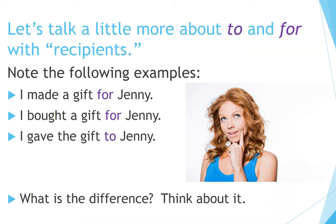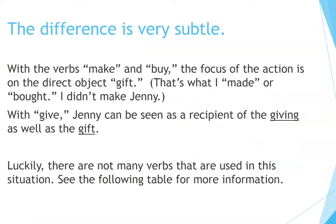Let's talk more about 'to' and 'for' with recipients. Consider: 'I made a gift for Jenny,' 'I bought a gift for Jenny,' and 'I gave the gift to Jenny.' The difference is subtle. With the verbs 'make' and 'buy,' the focus is on the direct object — the gift. That's what I made or bought; I didn't make Jenny. With 'give,' Jenny can be seen as a recipient of the giving as well as the gift. Luckily, there are not many verbs used in this situation.